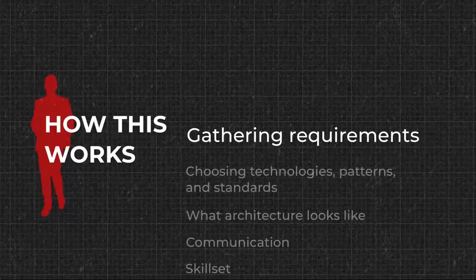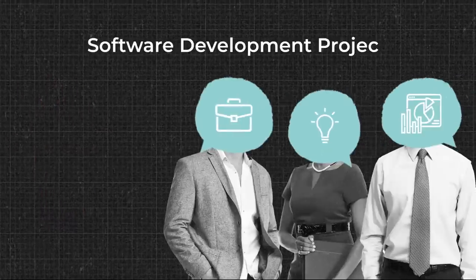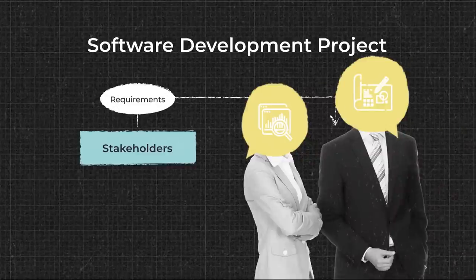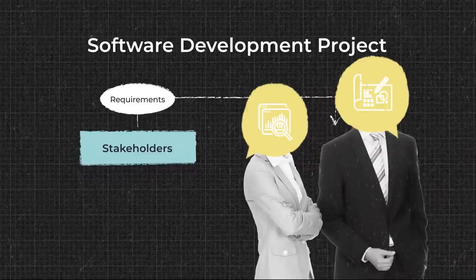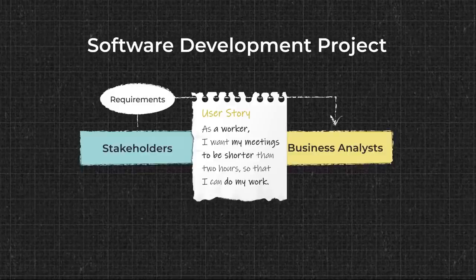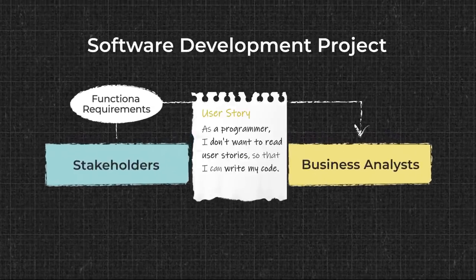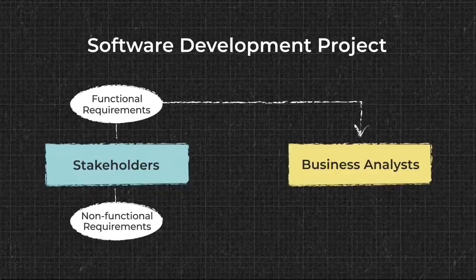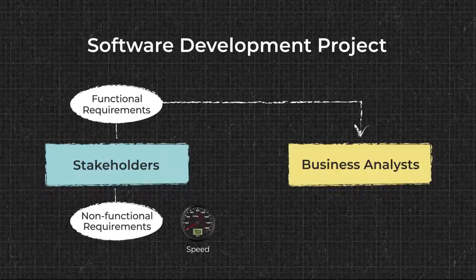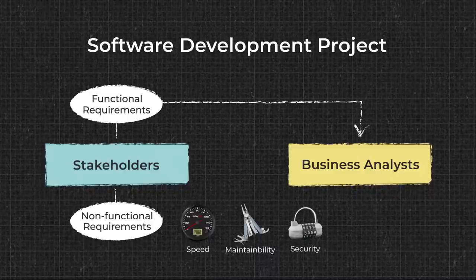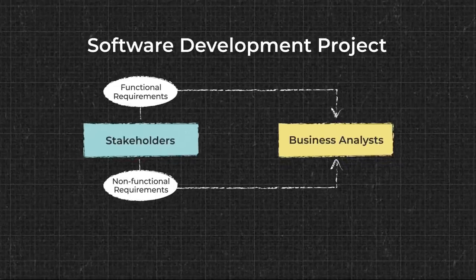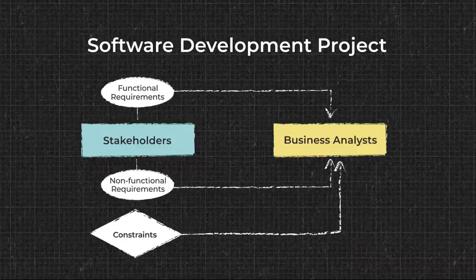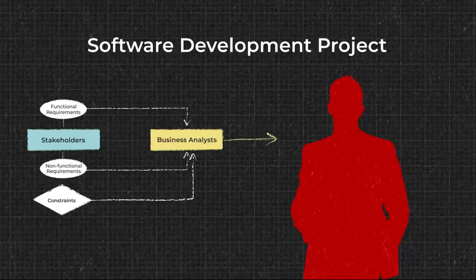Any software development starts with gathering requirements from a diverse group of people — stakeholders, user experience specialists, or even end users. Business analysts are in charge. They document requirements in user stories, short descriptions of product behavior from a customer perspective. These are functional requirements. There are also non-functional ones: the general qualities of software — its speed, maintainability, security, and others. Besides requirements, any project has its own constraints: a budget, manpower, time, licensing, and risks. A business analyst provides a solution architect with all these inputs.